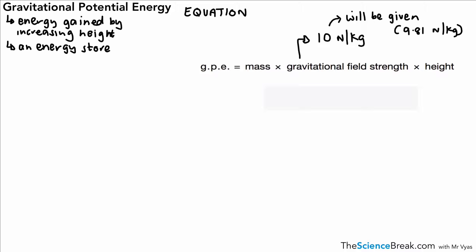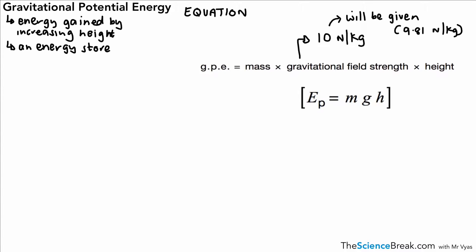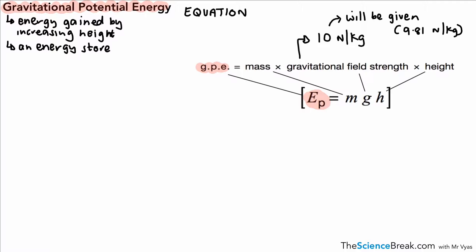Another way you might see this equation written is using symbols. Gravitational potential energy can be written as GPE or E with a small p. M is mass, gravitational field strength is written as G, and H is for height.